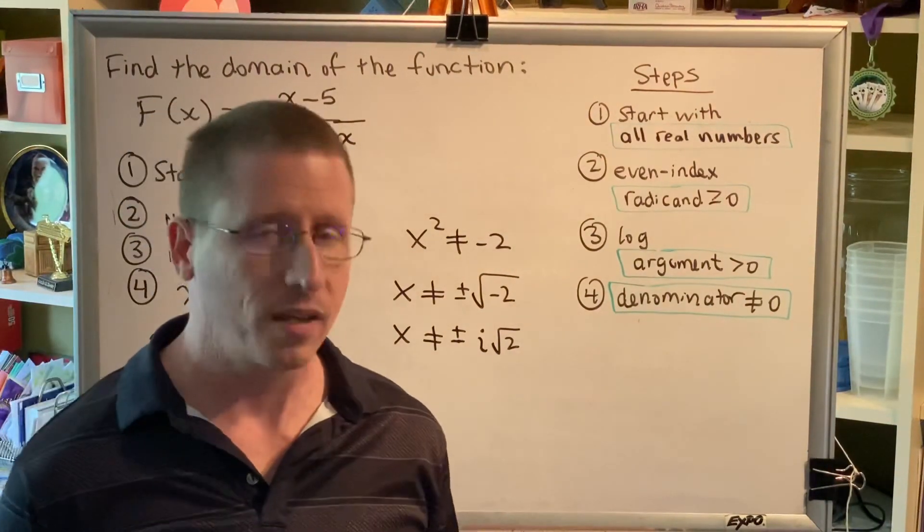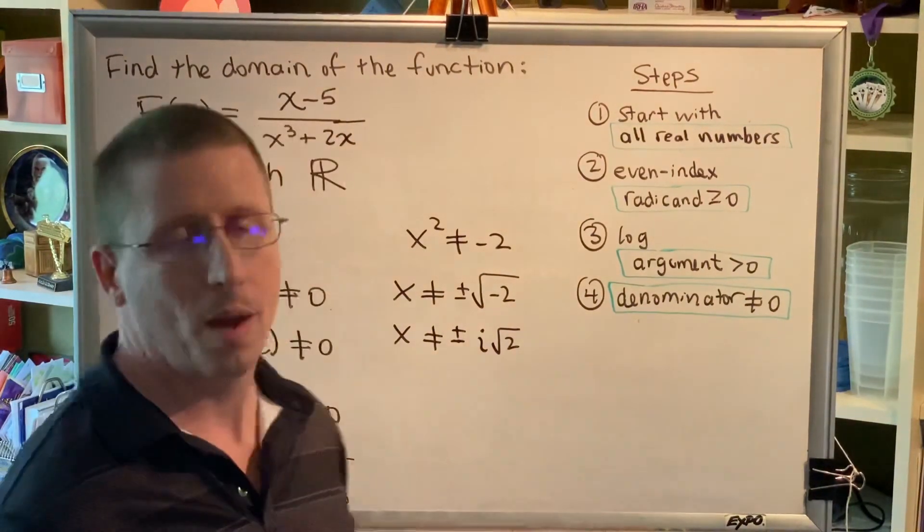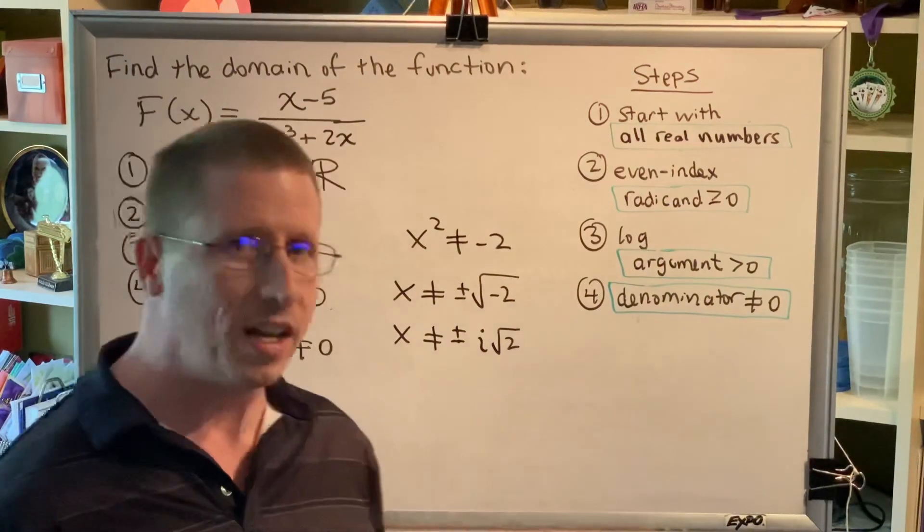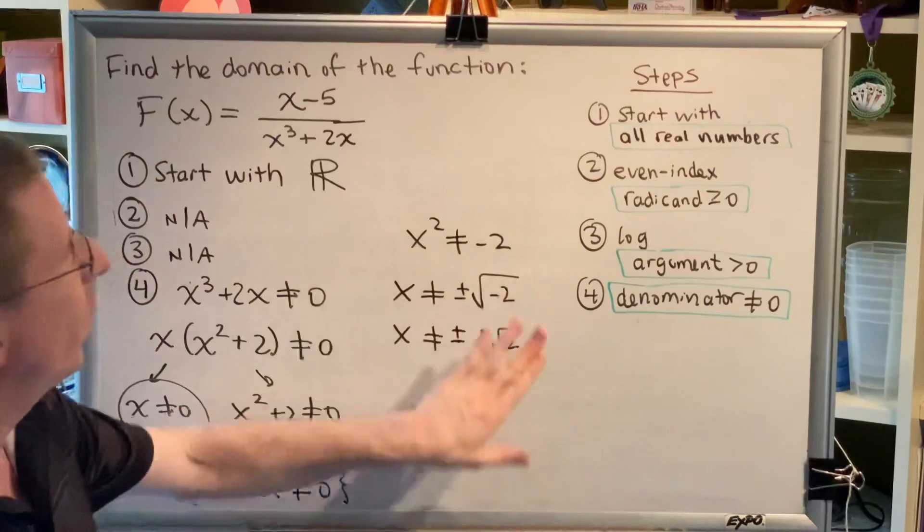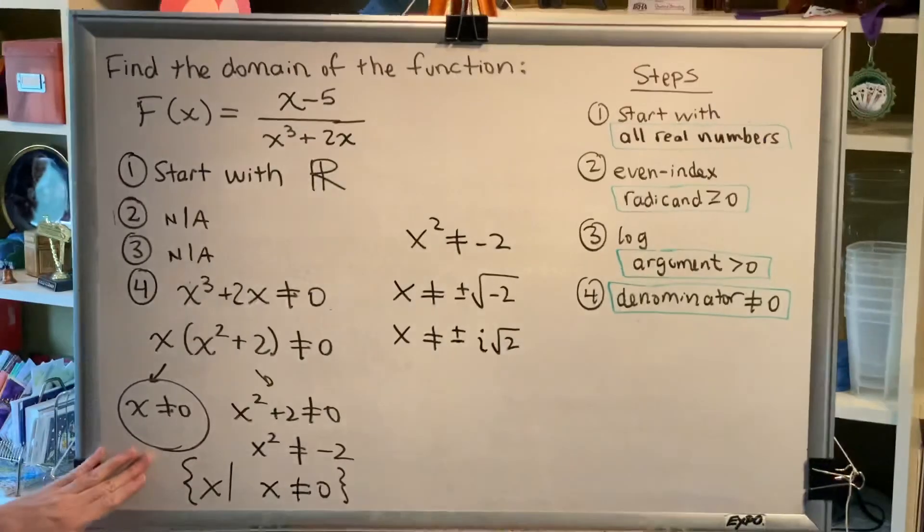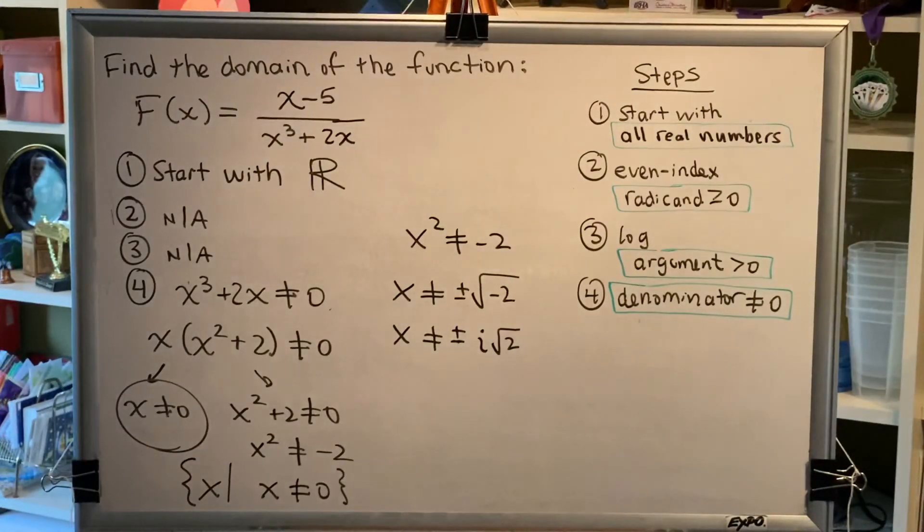So what this is telling me is that x is not allowed to be this particular pair of complex numbers. But we were never considering complex numbers to begin with. We weren't imagining that we would use any imaginary numbers as part of our answer anyway, which is why this is irrelevant and not part of our problem. So our final answer is x is not equal to zero.